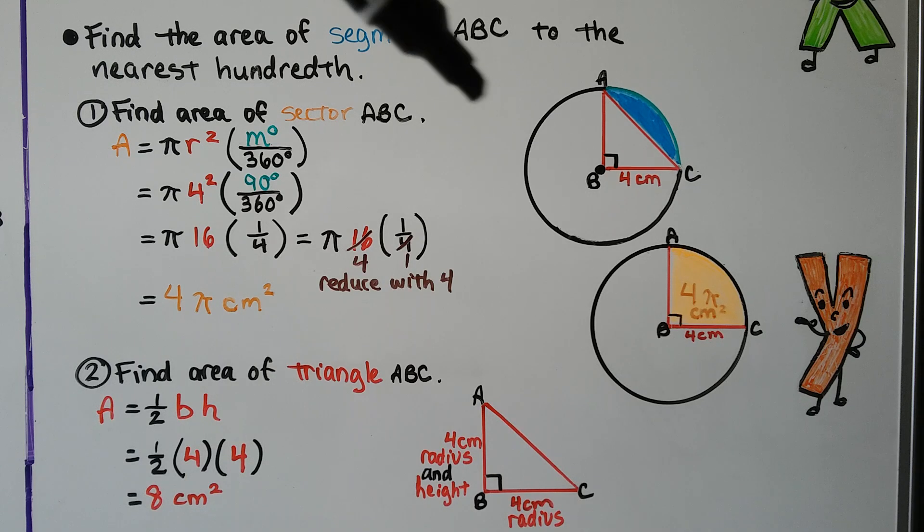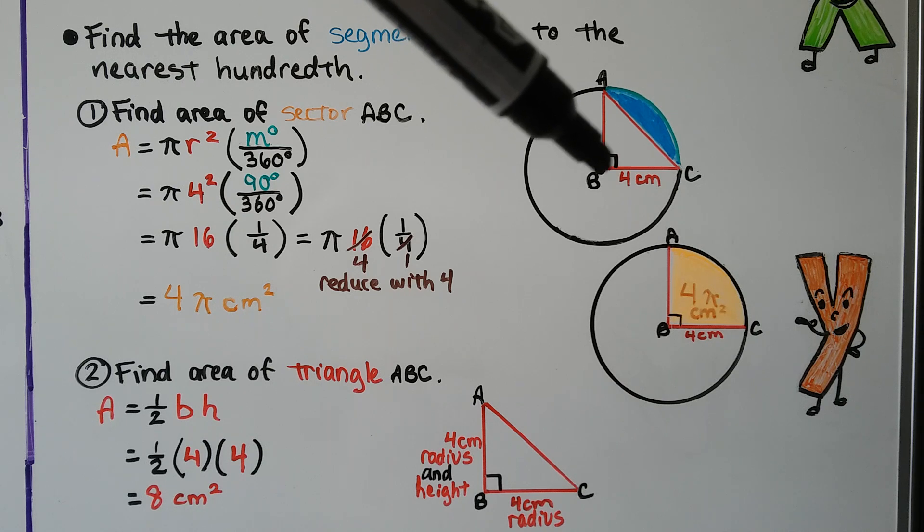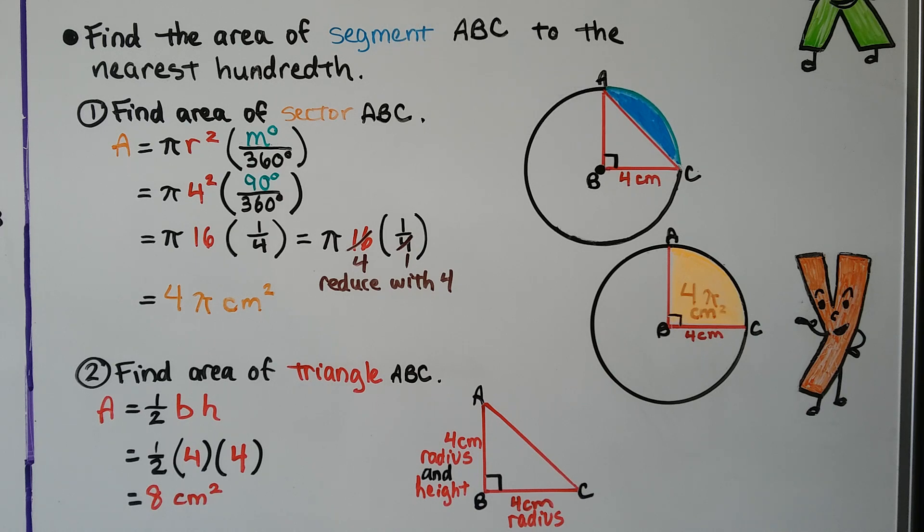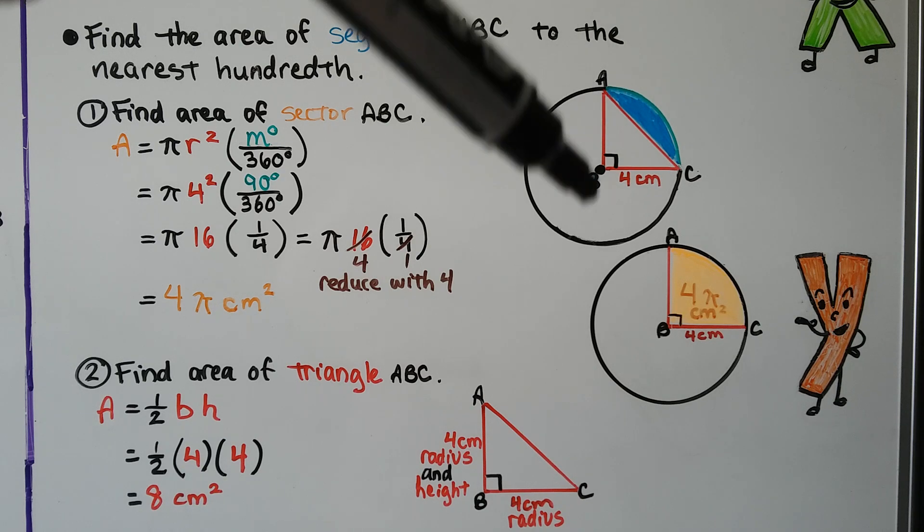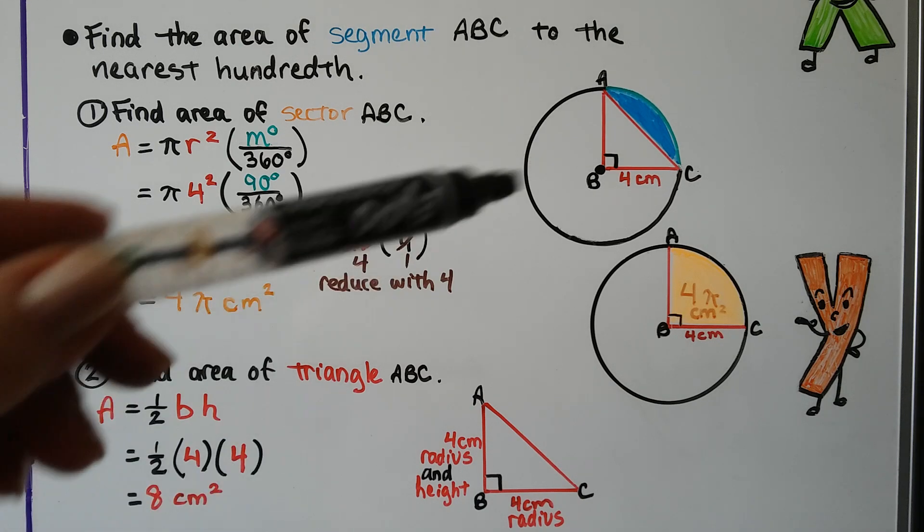Now take a look at this diagram. We have a 90 degree angle right here. So even though it's not listed, we can see that little box. We know that's a 90 degree angle. We can see the radius is 4 centimeters. And if that's 4 centimeters, then that radius is 4 centimeters, right? So that would be the height.